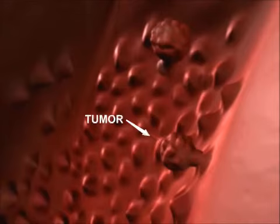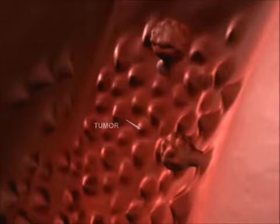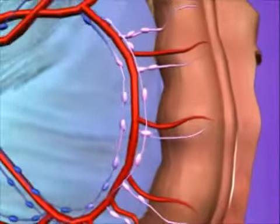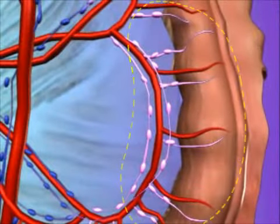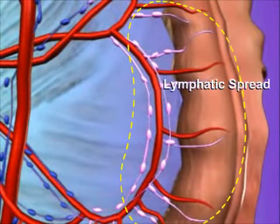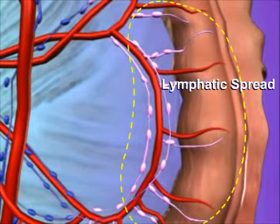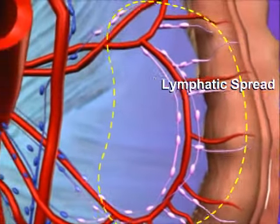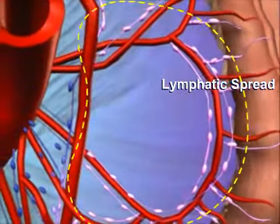Over a period of several years, a polyp has the potential to become cancerous. A cancerous polyp grows rapidly in size, eventually breaking through the wall of the colon and spreading through tiny channels called lymph vessels.